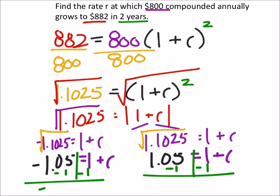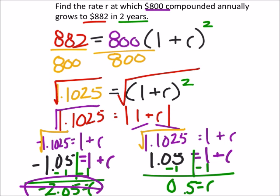And here we get negative 2.05 is the rate, and over here we get the rate is 0.5. Now we have to ask ourselves which of these makes the most sense: are we getting charged a negative 205 percent, or are we growing the account at 0.5 percent? Well, the only one of these that is going to make sense—because if it were a negative rate from this one, that means you would have to be losing money—so that one's no good.